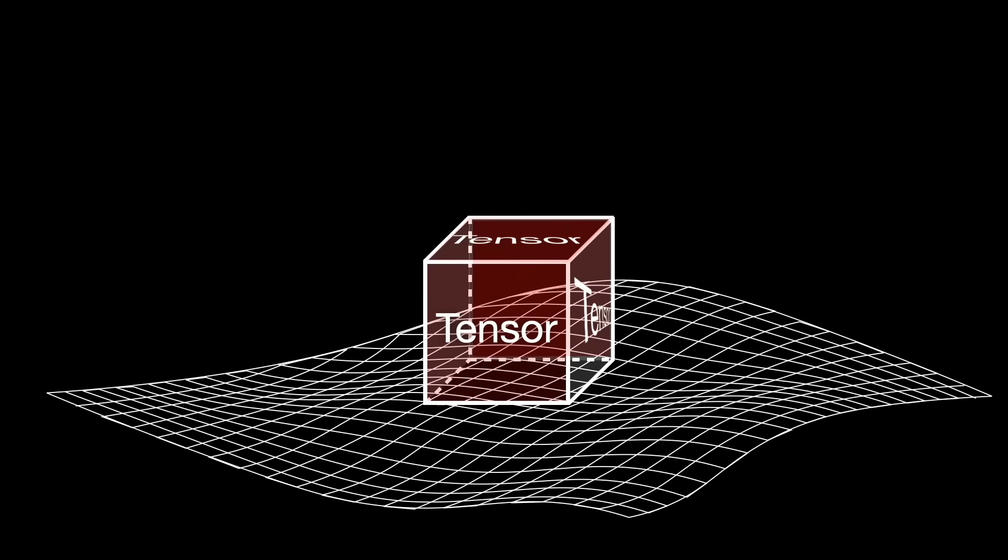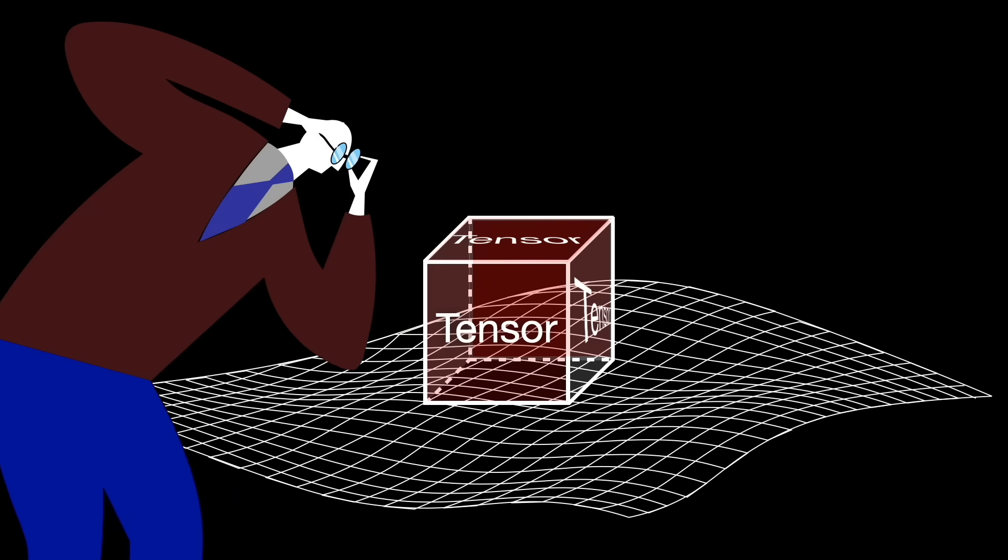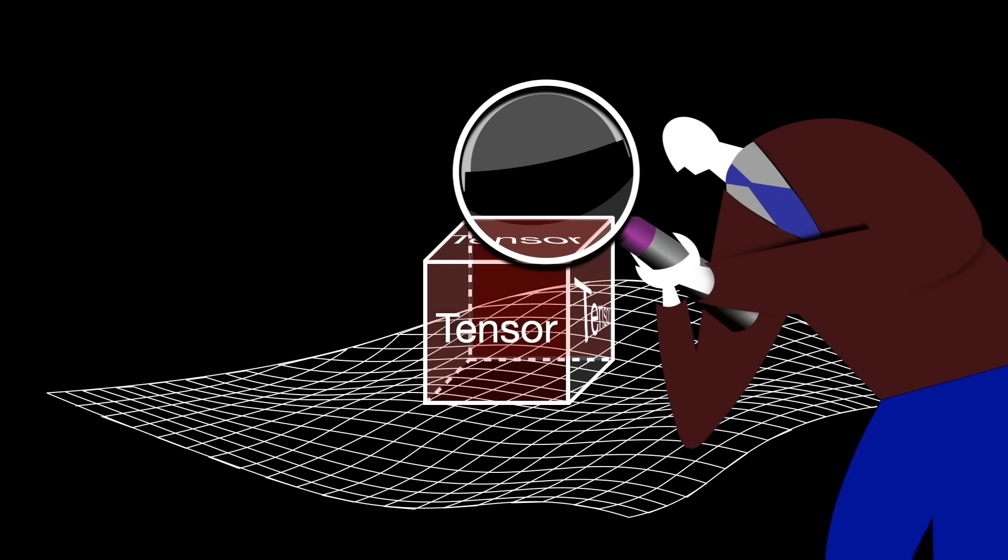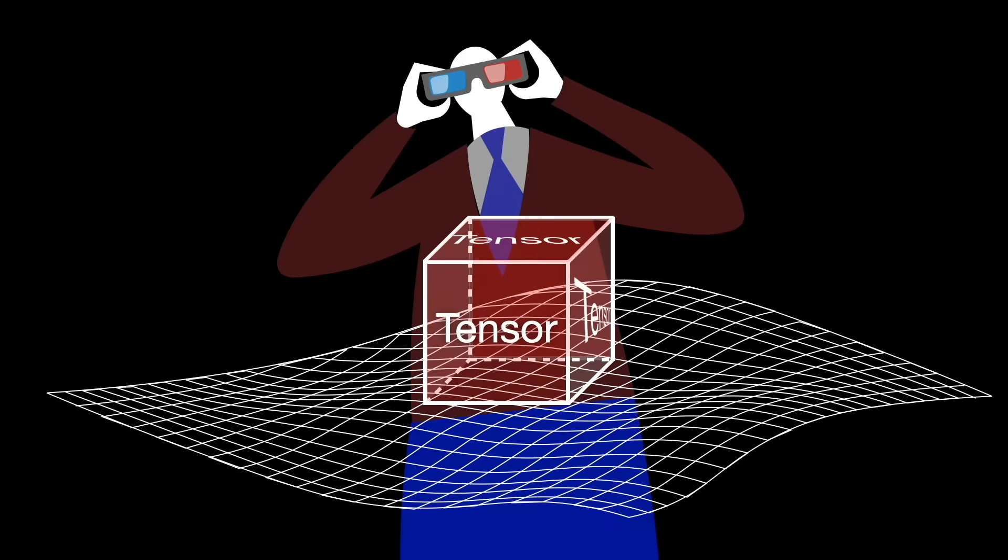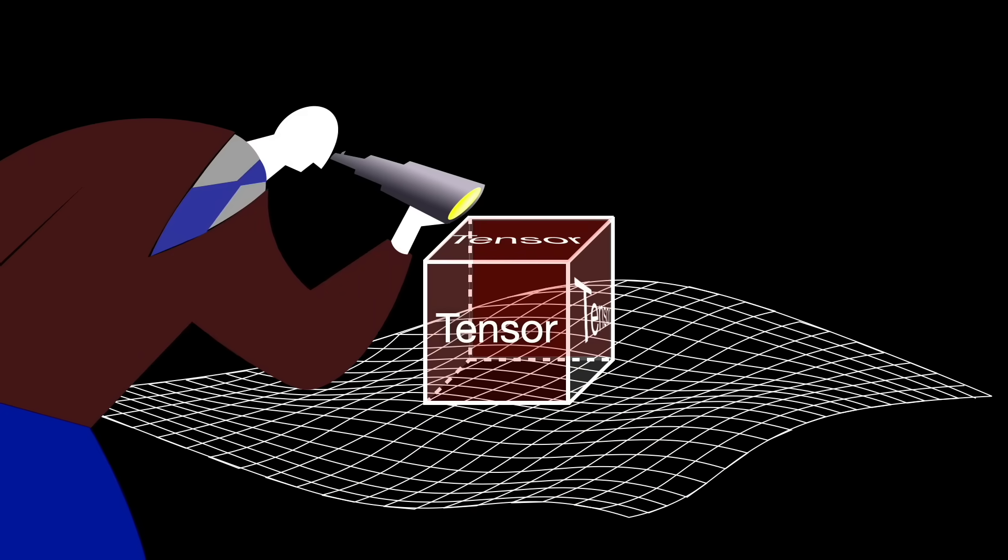A tensor is just a mathematical object that lives on a space, like spacetime or a curved surface, and has a rule that tells it how to stay the same when you change the way you are looking at the space.